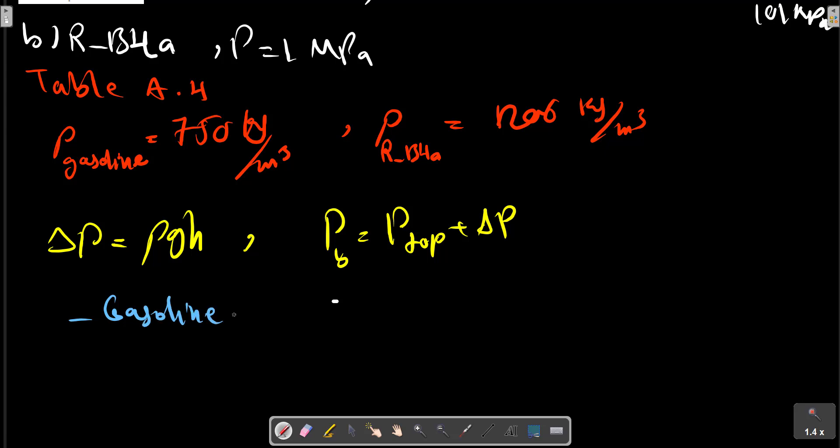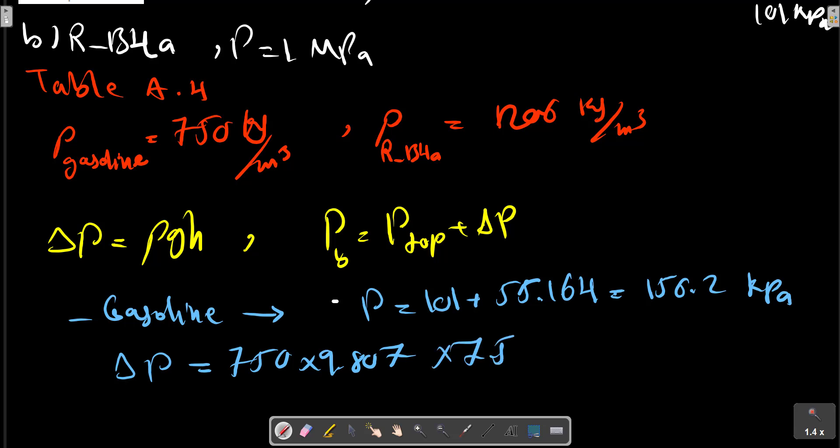For the first liquid gasoline, we can calculate the pressure delta P. We can obtain it from this relation.